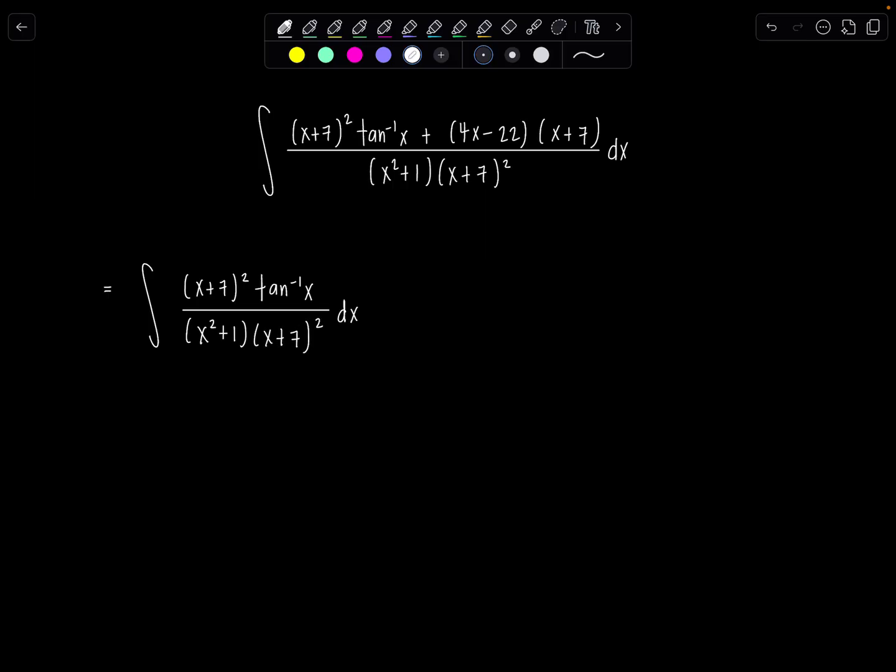That'll be integral number 1. And then the second one that we'll tackle, 4x minus 22 times x plus 7 over x squared plus 1 times x plus 7 squared dx. So this is integral number 1 and this will be integral number 2.